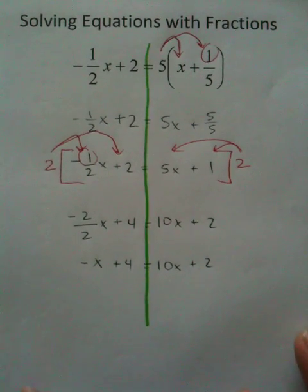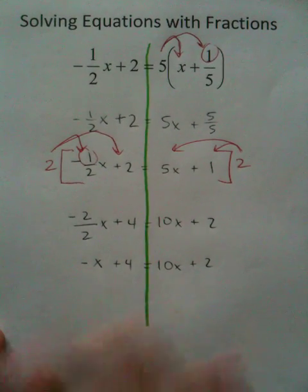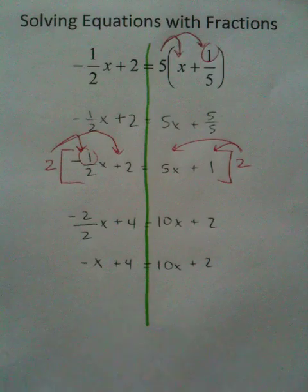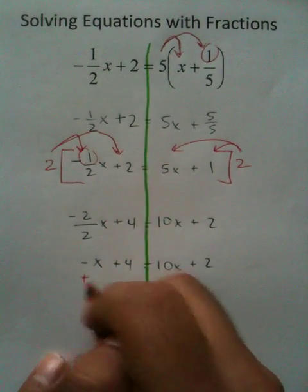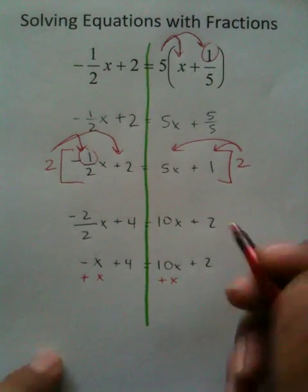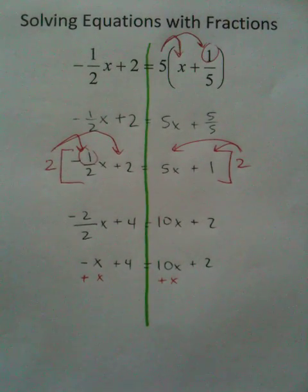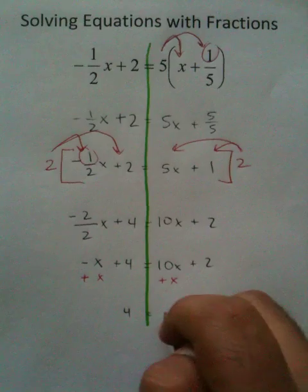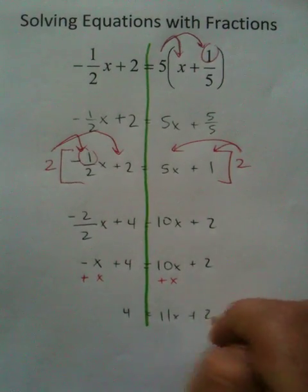And from this point, we can actually just solve the problem like we would solve a normal linear equation. We've got to get rid of one of the variables, either from the left side or the right side. So we're going to add x to both sides of the equation. You're then going to have 4 equals 11x plus 2.